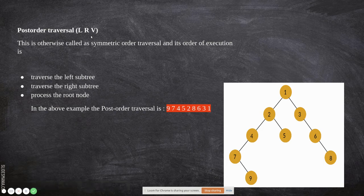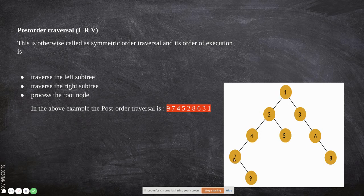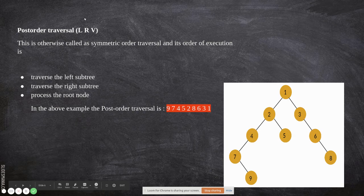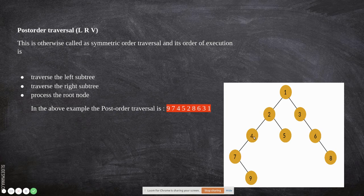Now for post-order traversal: first the left subtree, then the right subtree, and finally the parent. Starting from the root, we move left at every level without printing. When we reach a node with no left child but a right child, the right child (a leaf) is printed first, then the parent. Continuing back up: 9, then 4, then 5, then 2 is printed.